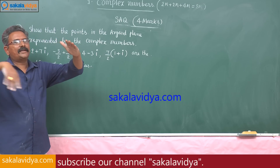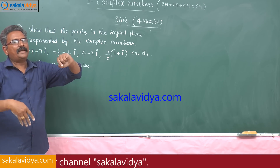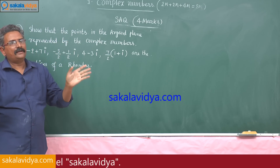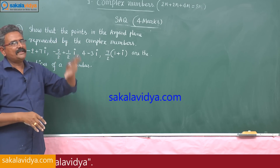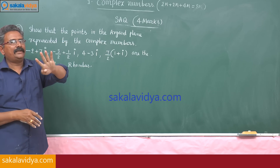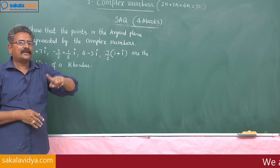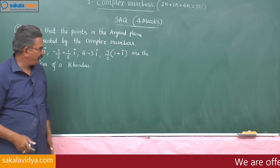A rhombus means all 4 sides are equal, but the diagonals are not equal. So it is enough to show that the 4 sides are equal whereas the diagonals are unequal.